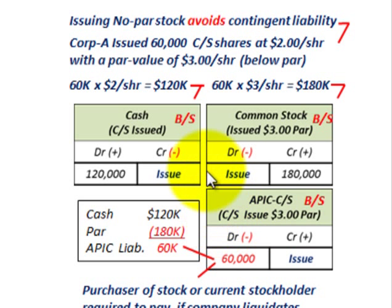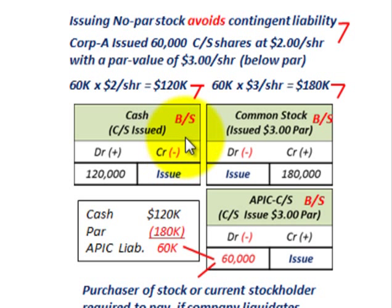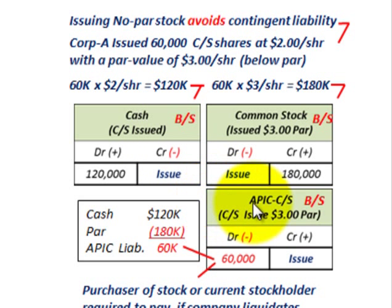So we looked at both cases: no par stock issued without a stated value and with a stated value, and reviewed the differences. We also looked at how to handle issue costs — either by reducing additional paid-in capital directly, or by capitalizing those issue costs and amortizing them as an expense.